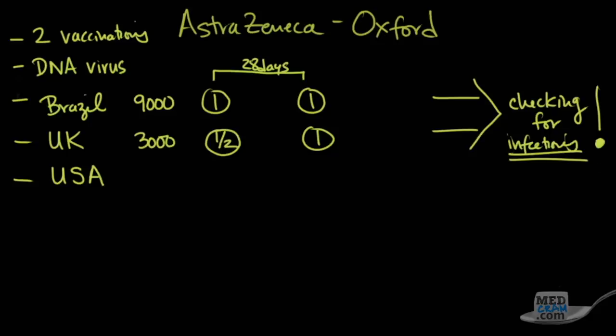Now what was really interesting and kind of a head scratcher is in the Brazilian portion of this study where they gave the full dose on the first injection and the full dose on the second injection, the efficacy was only about 62 percent. Now I say only because we're comparing it to what we know now about the other two vaccines, but 62 percent is not a bad result, and it certainly meets the benchmark or the threshold for getting emergency use authorization from the FDA both here in the United States and also in Europe.